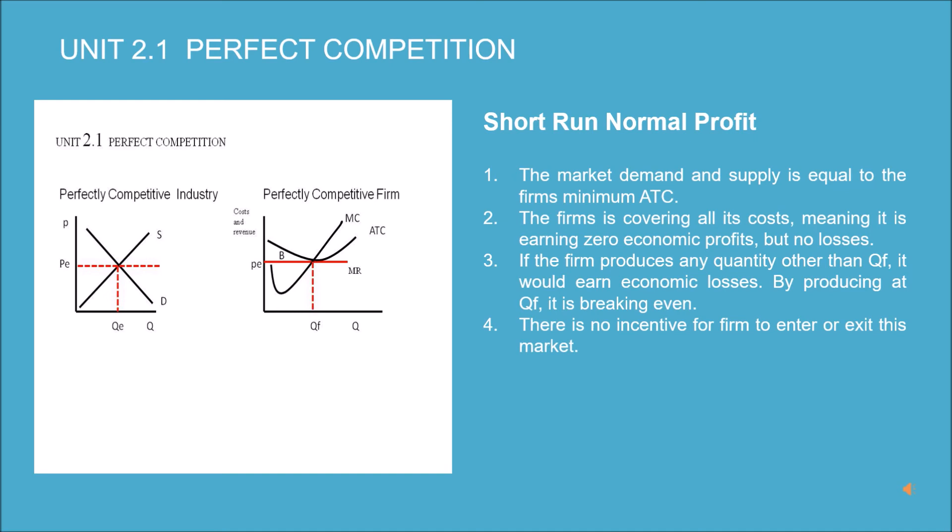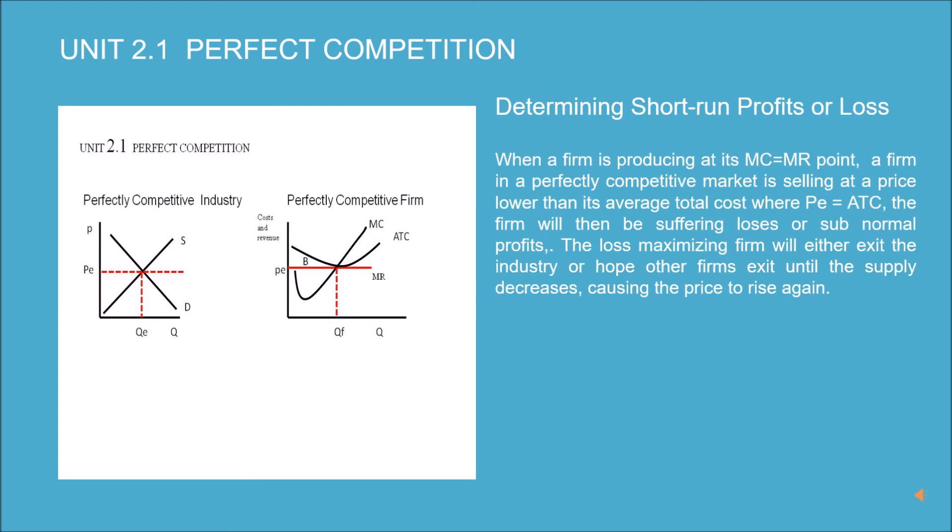If the firm produces any quantity other than Q_f it would earn economic losses. By producing at Q_f it is breaking even. There is no incentive for firms to enter or exit this market.